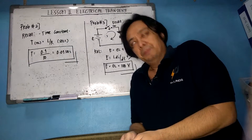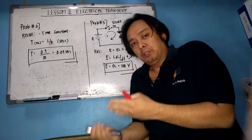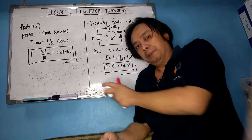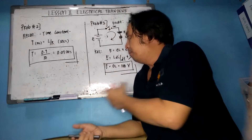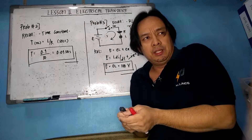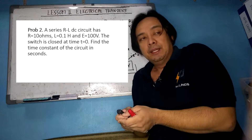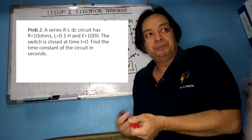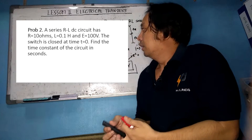Good day. We will continue our lesson on electrical transients with problem solving. Problem number two: a series RL DC circuit has 100 ohms resistance, inductance of 0.1 henry, and E = 100 volts. The switch is closed at time equal to zero. We need to find the time constant of the circuit in seconds.